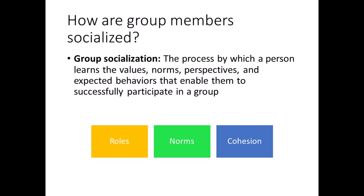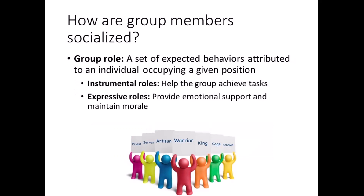Group socialization involves a number of variables. We'll focus on three of them here: roles, norms, and cohesion. When people are effectively socialized, they fit in because they understand and adopt the norms and values of the group. A role is a set of expected behaviors and standards for each group member occupying a given position within a group.